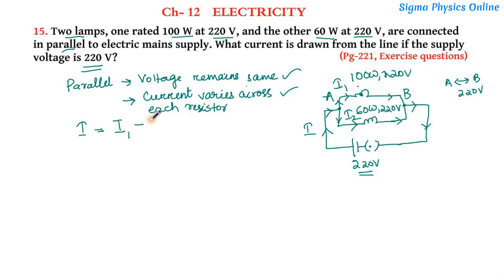or the overall current in the circuit will remain the same. The total current in the circuit will be the sum total of the current that is flowing in these two individual resistors or the lamps. So let's find out the current flowing through each of them. Let's find out the value of current I1 that is flowing through the